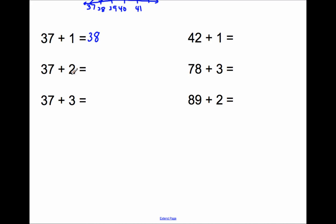37 plus 2 means you start at 37 and count on for two more numbers. So you'd say 37, 38, 39. And the answer to 37 plus 2 is 39. The number that you end up on is your answer.